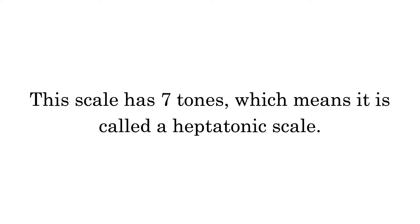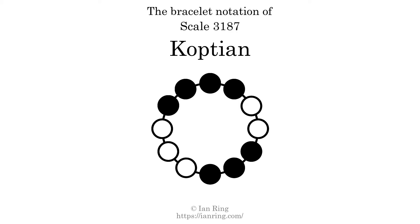This scale has 7 tones, which means it is called a heptatonic scale. This is a bracelet notation diagram of scale 3187. The shaded circles represent tones that appear in the scale, and they are read clockwise, starting at the top.